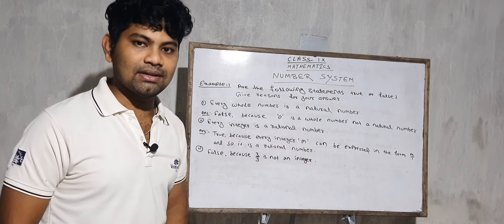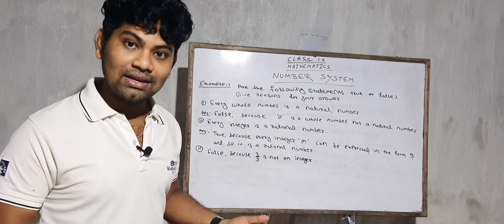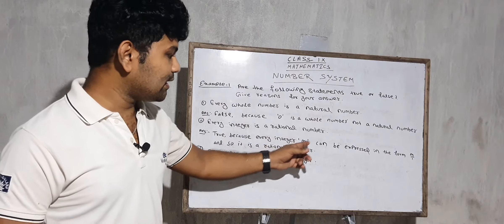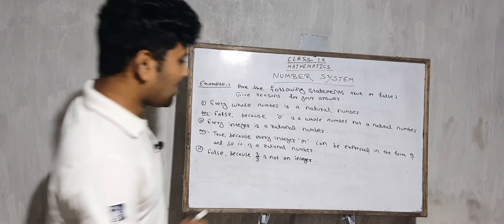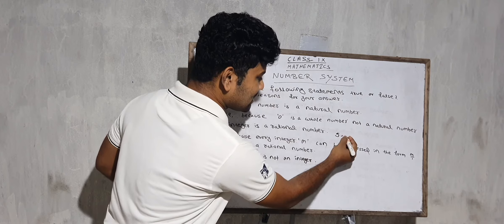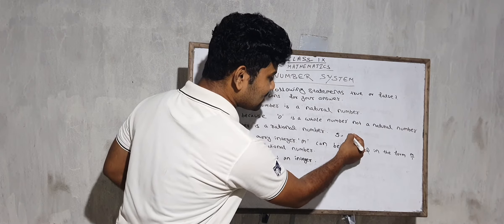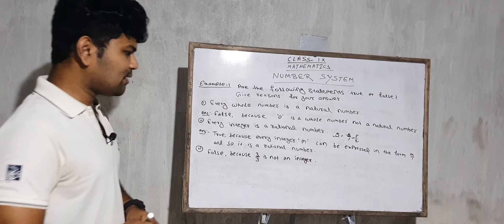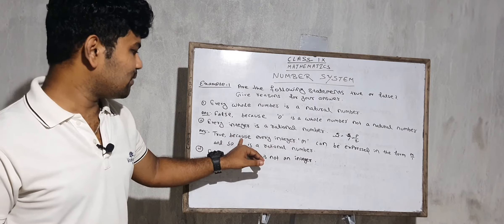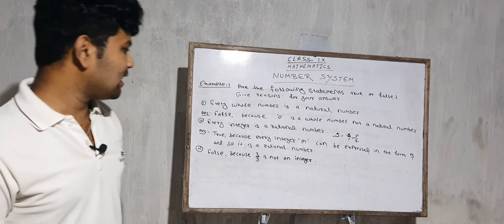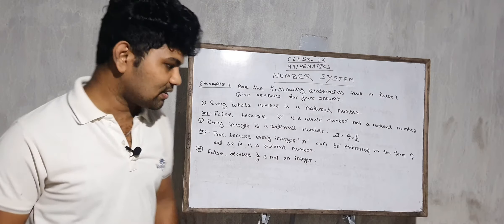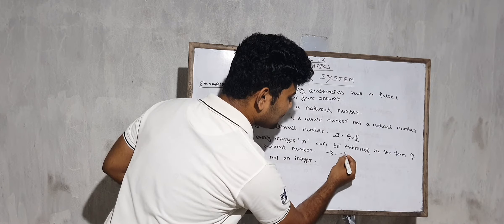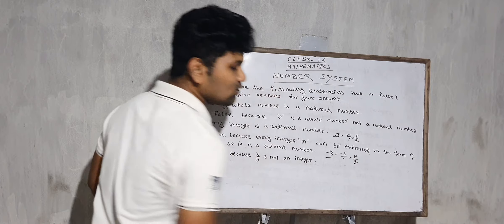Next question: every integer is a rational number. This is TRUE. Because every integer m can be expressed in the form m by 1. For example, 5 can be written as 5 by 1, which is the form P by Q — so 5 is a rational number. Similarly, minus 3 can be written as minus 3 by 1, which is also in the form P by Q, so minus 3 is also a rational number.